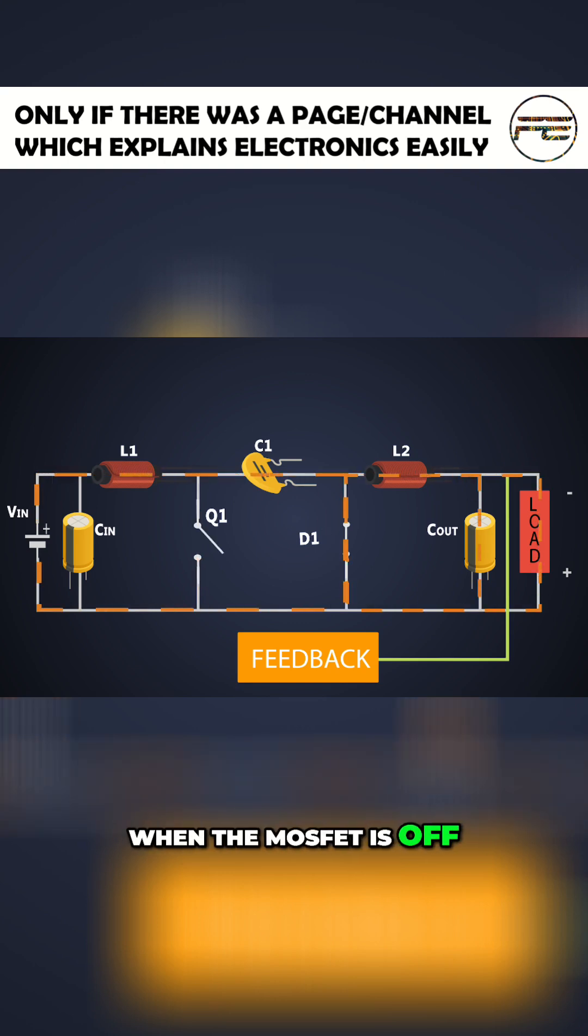When the MOSFET is off, these inductors release the stored energy. So L1 charges the series capacitor and L2 provides the output power. And this is how a tube converter works.